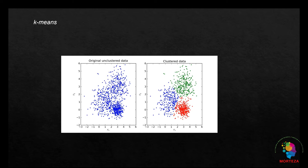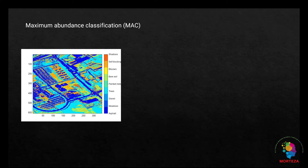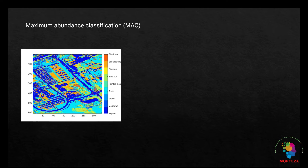The second method to classify the hyperspectral image is maximum abundance classification, or MAC. An abundance map characterizes the distribution of an end-member across a hyperspectral image. Each pixel in the image is either a pure pixel or a mixed pixel. The set of abundance values obtained for each pixel represents the percentage of each end-member present in that pixel. In this example, I would classify the pixels in the hyperspectral image by finding the maximum abundance values for each pixel and assigning it to the associated end-member class. In other words, spectral reflectances are assigned to one of the end-member classes according to how similar they are.